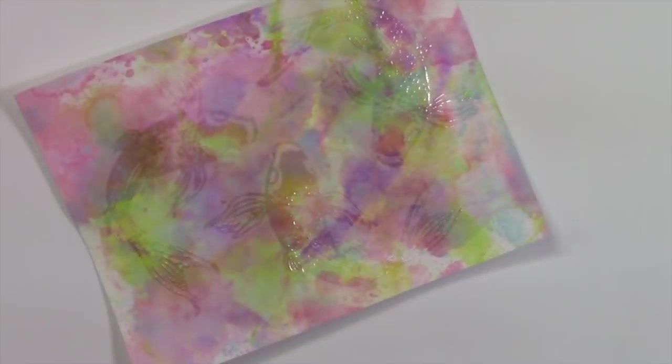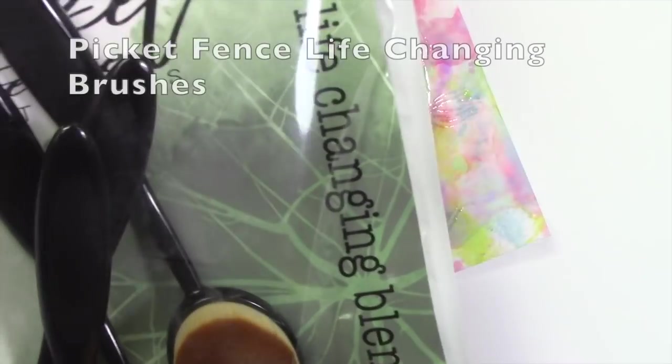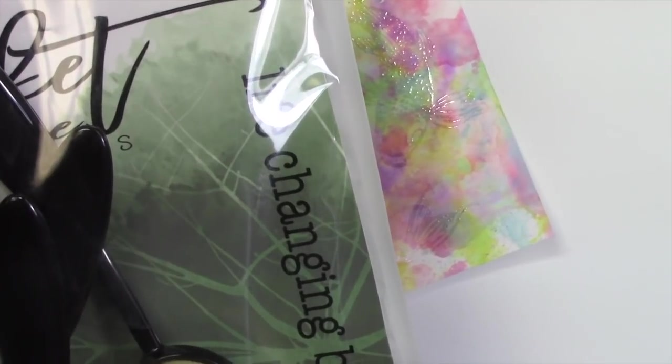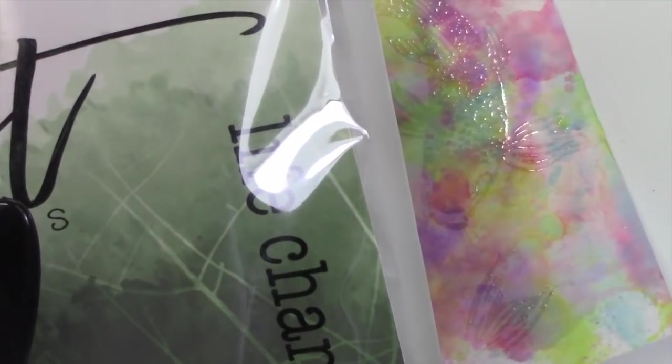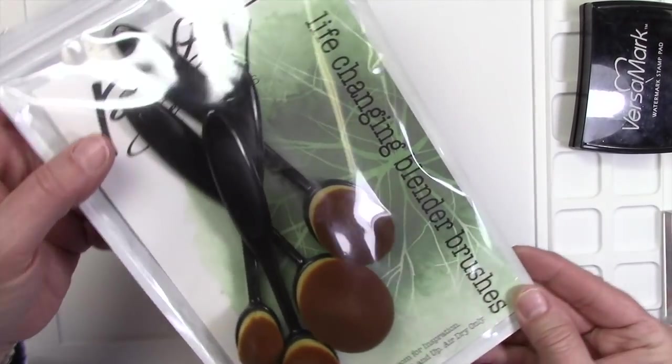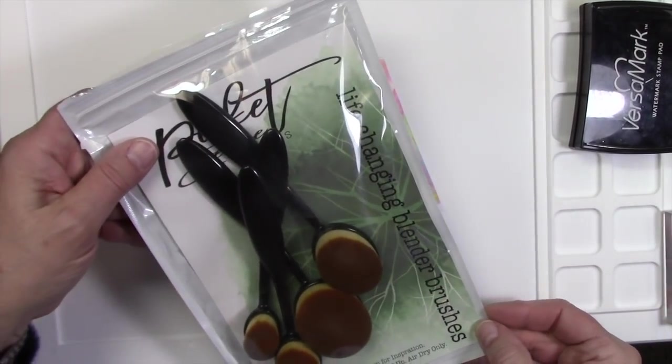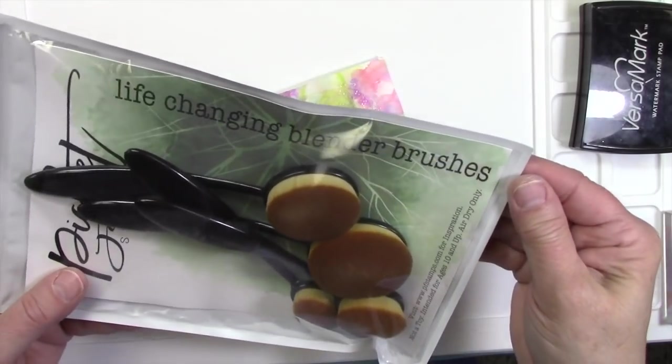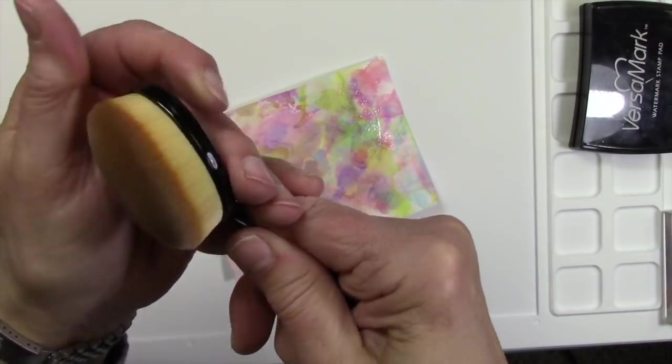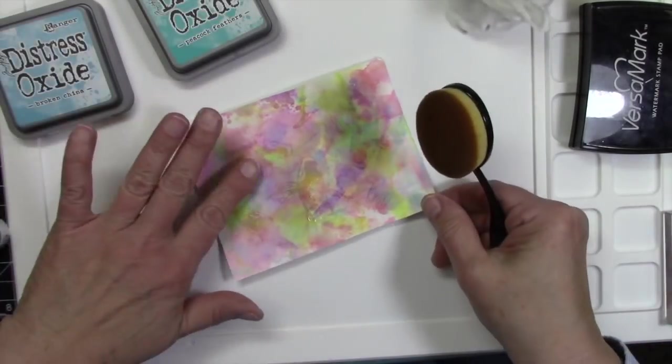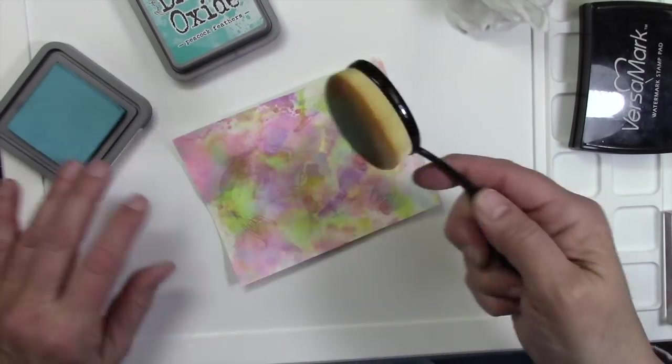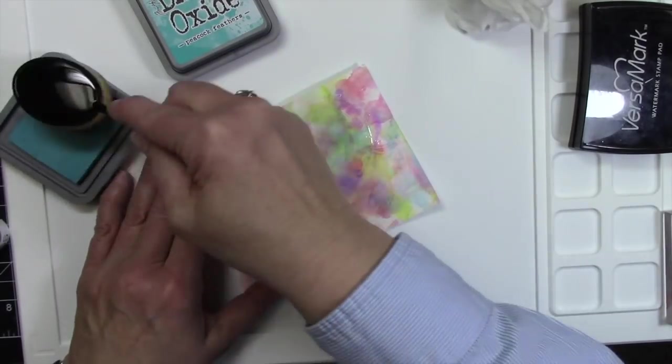The next product I wanted to introduce are the Picket Fence Life Changing Blending Brushes. Now, I knew I needed a change in my life, but I didn't know this would be it. If you have issues with having harsh kind of circle marks from using your blending pads, which I do because I'm not the best at that, these brushes really are easy to apply. They're very soft and we're going to test them out here so you can see them for yourself. I only have the set of the big four right now, but I think I'm going to get those little ones.